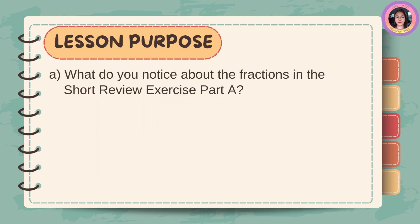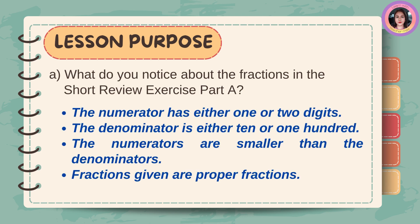What do you notice about the fractions in the Short Review Exercise Part A? The numerator has either 1 or 2 digits. The denominator is either 10 or 100. The numerators are smaller than the denominators. Fractions given are proper fractions.